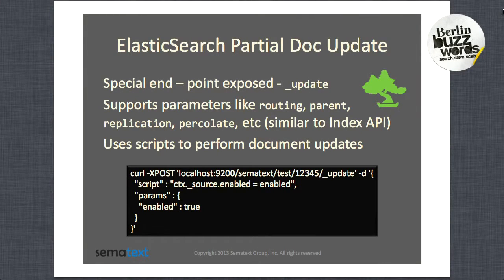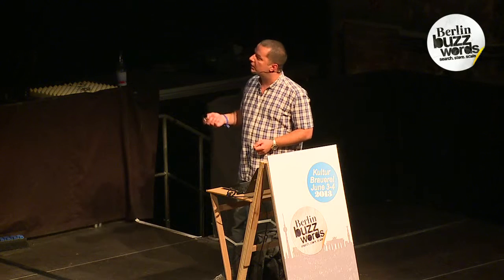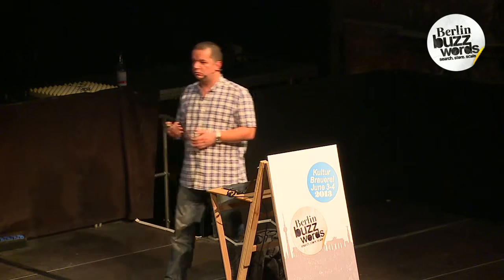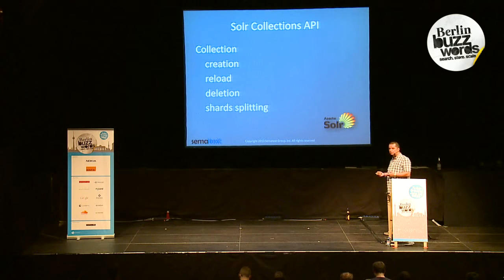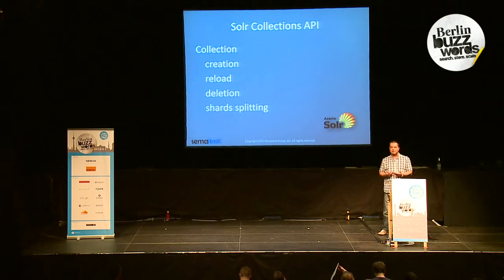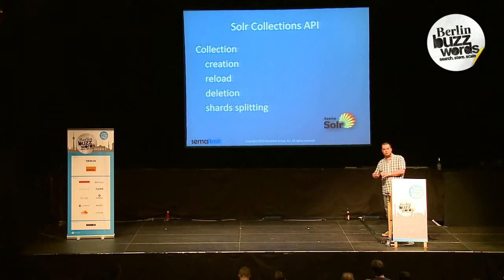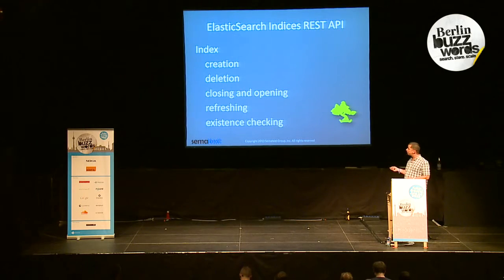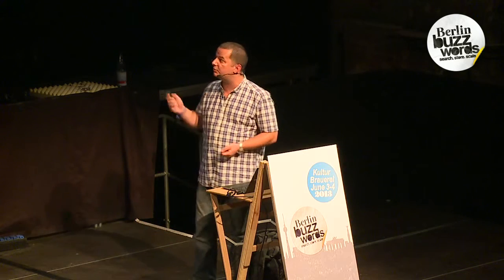When it comes to administrative functions in Solr, one nice thing is the collection API. It allows us to create, reload, delete collections, but also split shards — something new and very nice, because you don't need to over-shard. You can just leave it and split it later. In Elasticsearch, the indices REST API allows creation, deletion, closing, and reopening of the index, as well as refreshing and checking existence — all provided by the API.